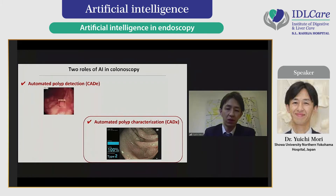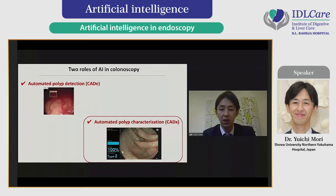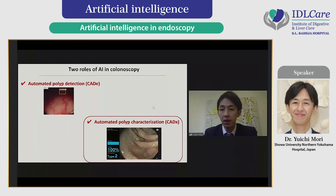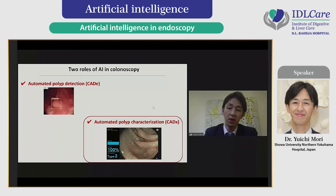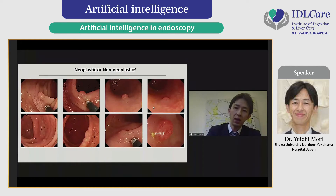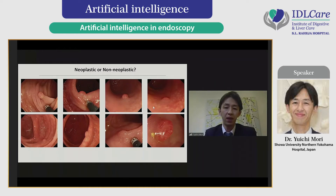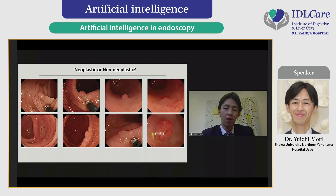Moving on to the next topic: computer-aided prediction of histopathology of polyps. The main target is basically small lesions because of their prevalence—polyps less than 10 millimeters account for 80% of all polyps during colonoscopy. It is very challenging to identify neoplastic change from non-neoplastic polyps from white light images. In this picture you can find eight polyps; however, four are neoplastic while the remaining four are non-neoplastic.